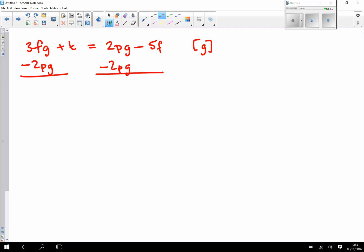So on the left-hand side of the equation, I'm left with 3FG minus 2PG, add T, equals negative 5F.